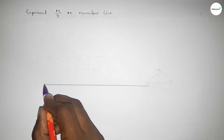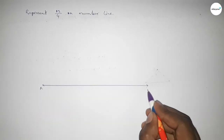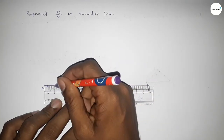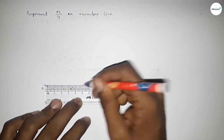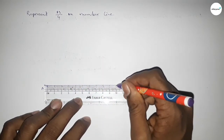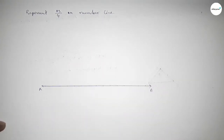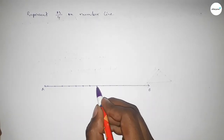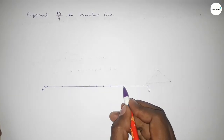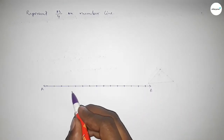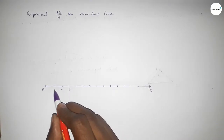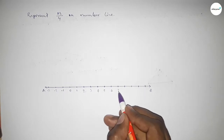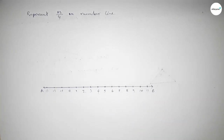Drawing a line now, taking arrow marks on both sides. This is a number line. Next, we have to mark the numbers on the line using a scale. Now marking the numbers with deep color to understand perfectly. Taking the starting number zero, this side minus one, minus two, minus three, and this side one, two, three, four, five, six, seven, eight, nine, ten, eleven.